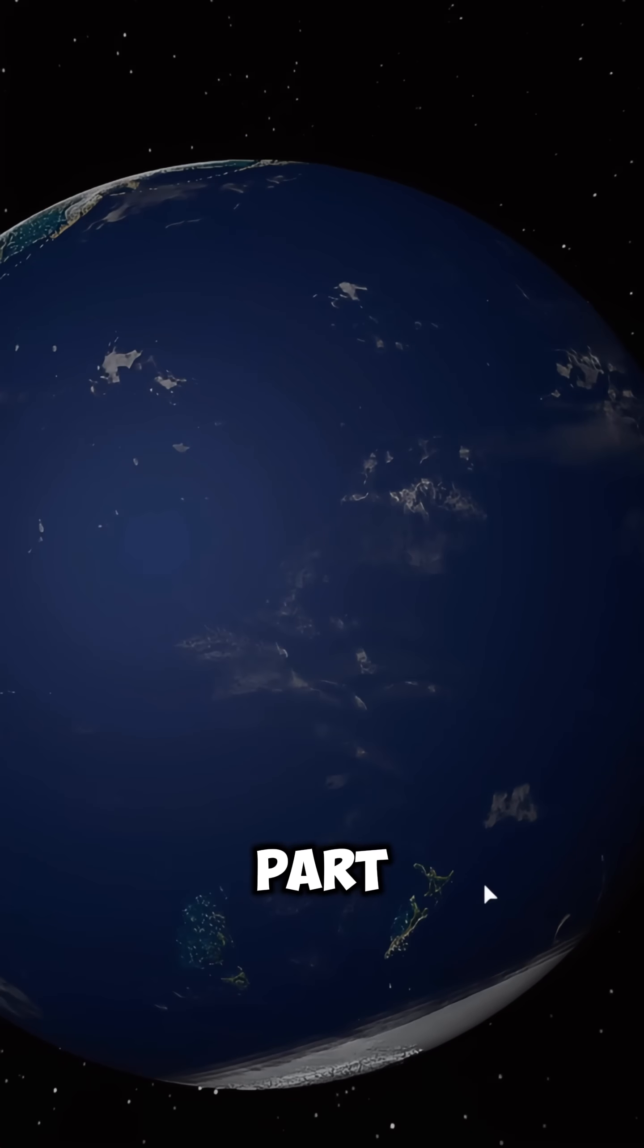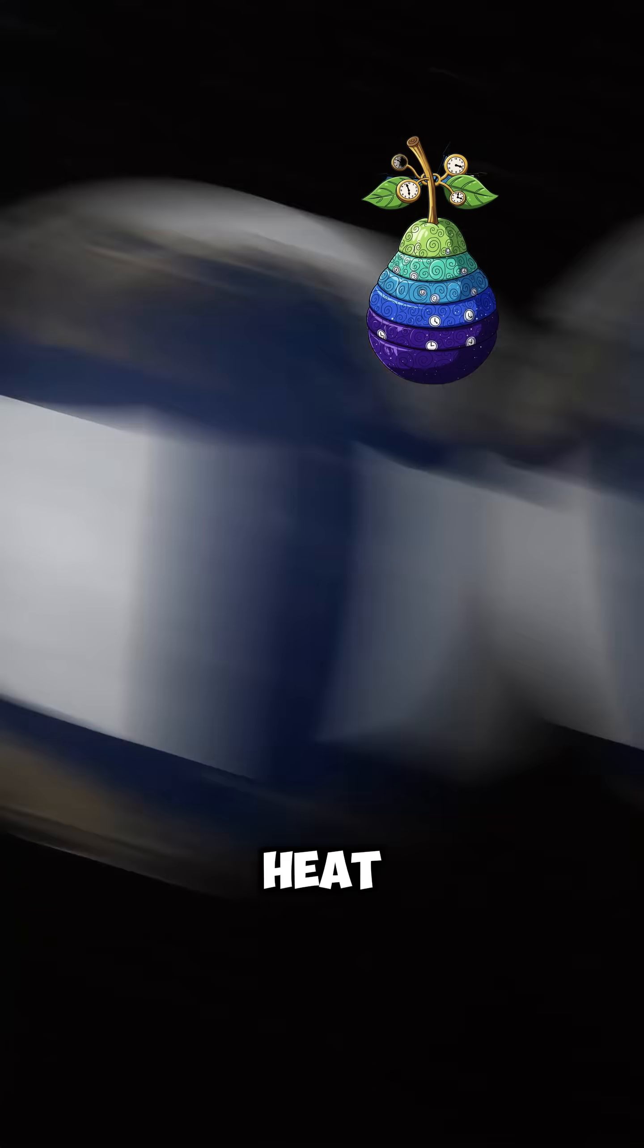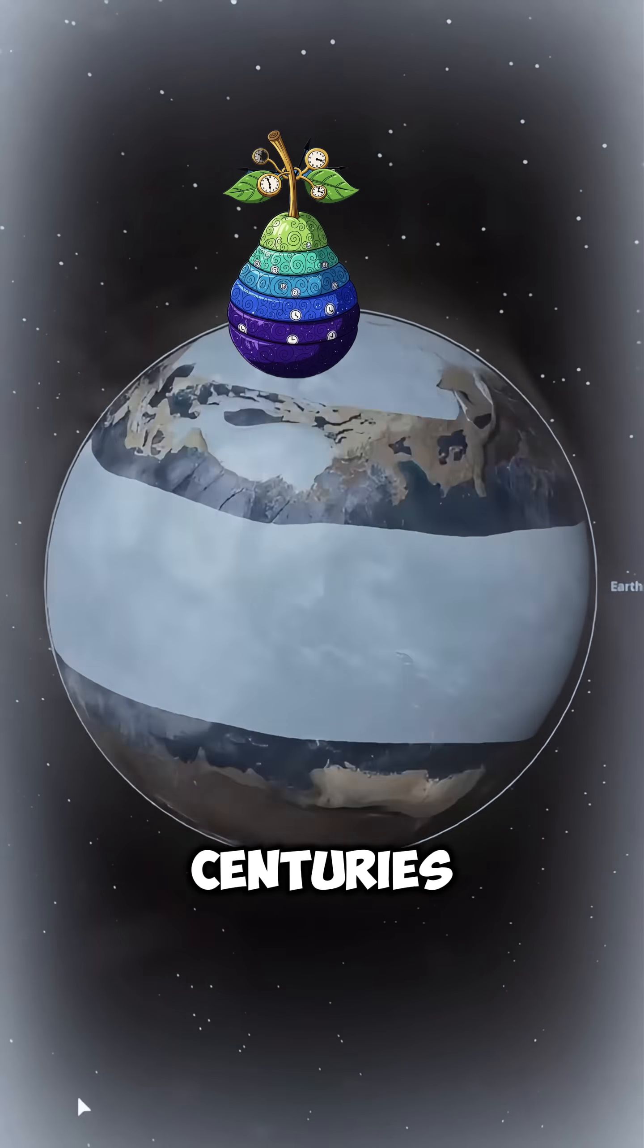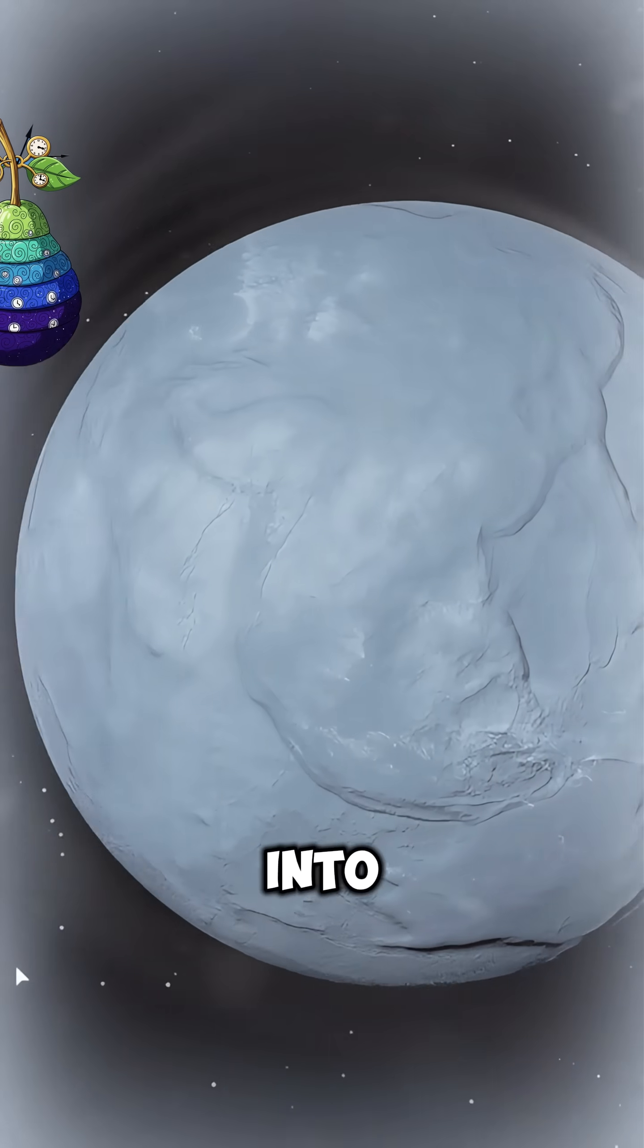But here's the most curious part. If we fast forward through time, the extreme rotation would make the planet lose heat faster into space. Over the centuries, the temperature would drop drastically, freezing the oceans and turning the world into a new ice age.